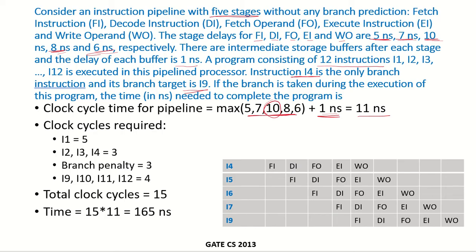Now let us look at the number of clock cycles required by each instruction. There are 5 stages, so the first instruction i1 will require 5 clock cycles. The rest — i2, i3, and i4 — will each be completed in every subsequent clock cycle, so 1 clock cycle each, requiring 3 clock cycles total.